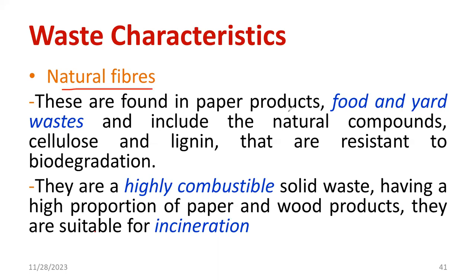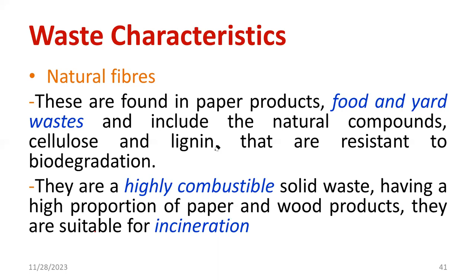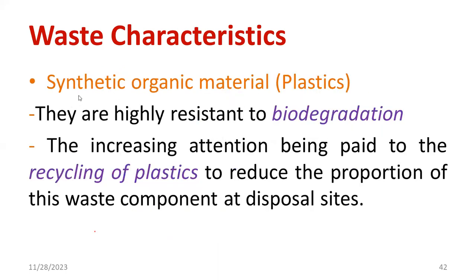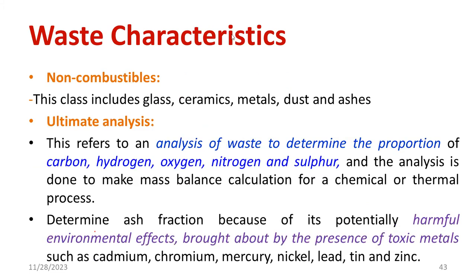Next is natural fibers. The main source is food and yard waste. It is highly combustible and most fiber-type material is suitable for the incineration process. Incineration is very costly — it is a partial oxidation conducted in a closed chamber called an incinerator. Another type is synthetic organic material, especially plastic. It is highly resistant to biodegradation. Most plastic synthetic material is suitable for recycling. There are two types of plastic: one is thermoplastic, and the other is thermosetting plastic. Thermoplastics are suitable for recycling, whereas thermosetting plastic makes recycling quite impossible. Non-combustible materials — glass, ceramic, metal — need to be carefully handled during segregation.